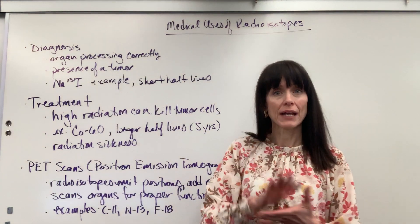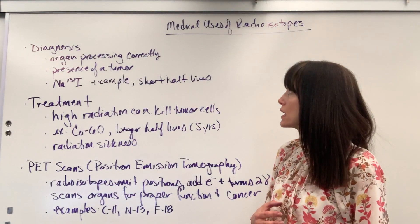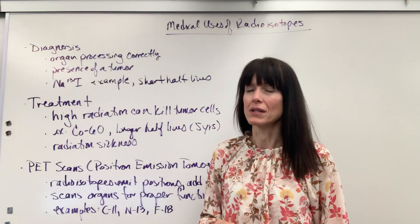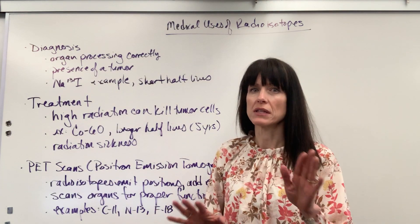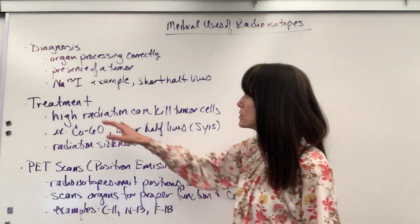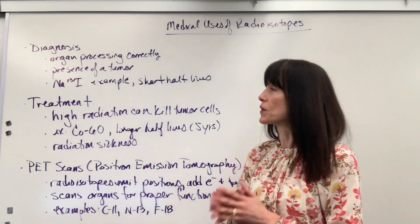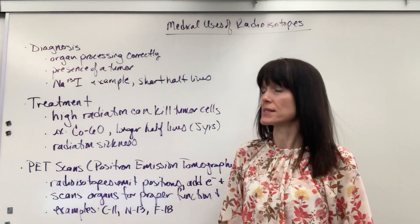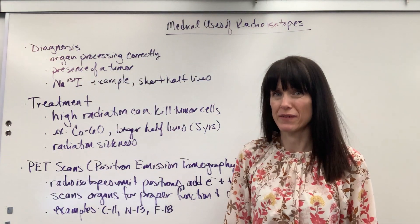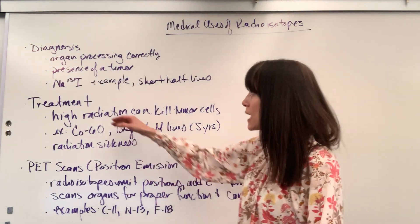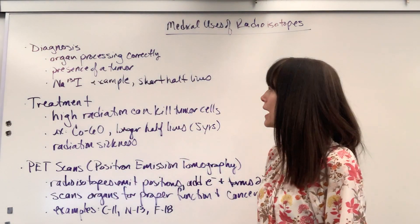We can use radioisotopes to do diagnosis — we can look at if an organ is processing correctly. One of my twins, when she was about a year old, we weren't sure if everything in her bladder was working correctly, so they had her do an iodine test. We can also use this for the presence of a tumor, to identify if a tumor is somewhere in somebody's body. An example would be sodium iodide, where the iodide is radioactive — the I-131 isotope.